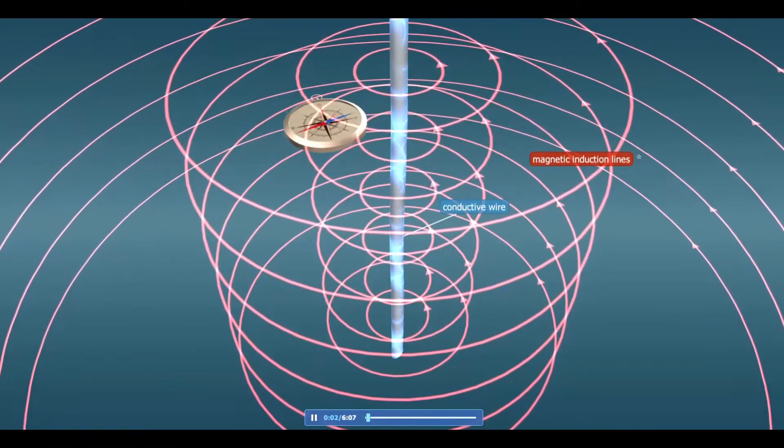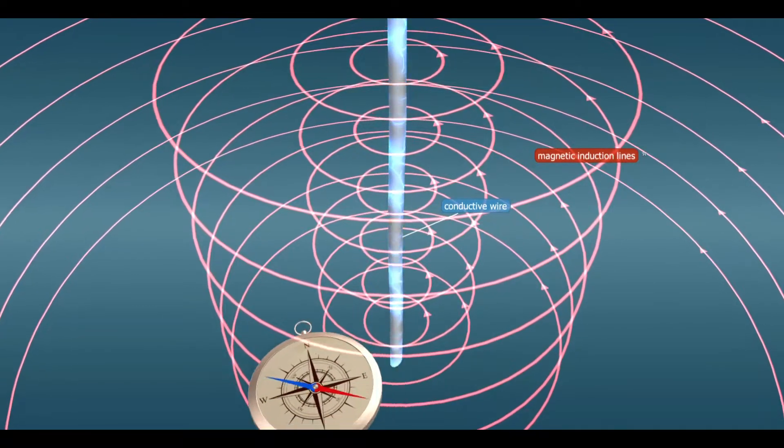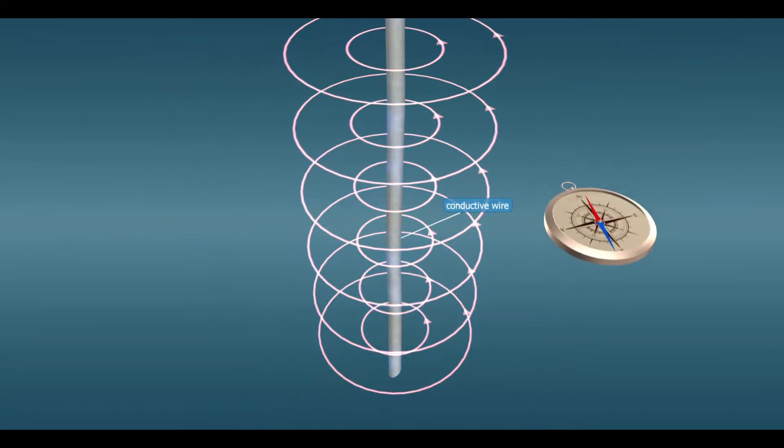Electric motors can be found in many areas of our everyday lives. Although there are various types, all of them use the magnetic effect of electric current.